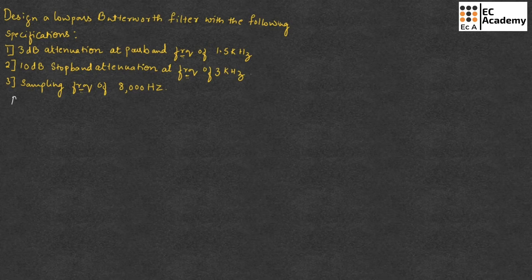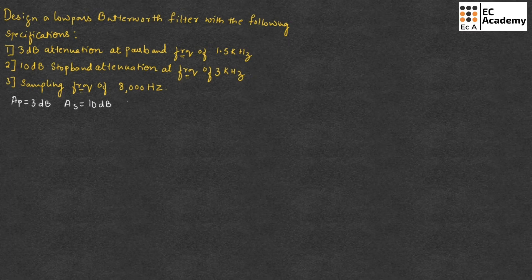Passband attenuation is 3dB, stopband attenuation is 10dB, and sampling frequency is 8000 Hz.